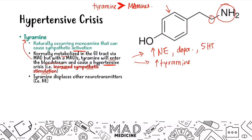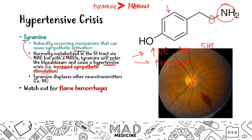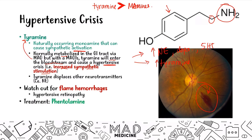One physical finding to watch out for is flame hemorrhages — retinal hemorrhages indicative of hypertensive retinopathy. Because the blood pressure is so high, blood vessels break due to the increased pressure. The treatment for hypertensive emergency is phentolamine, an alpha-adrenergic blocker that causes vasodilation and helps reduce hypertension. You also want to ensure the patient stops eating tyramine-rich foods while taking MAOIs.